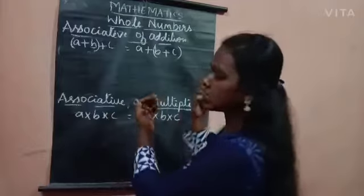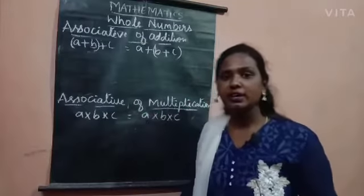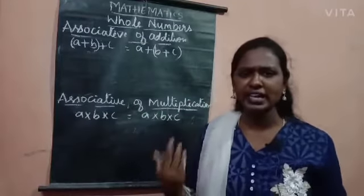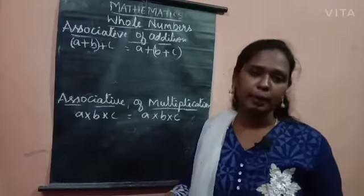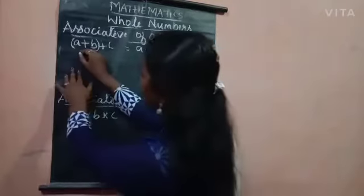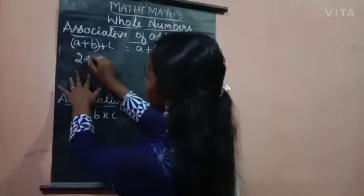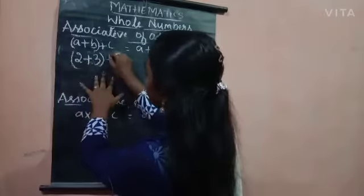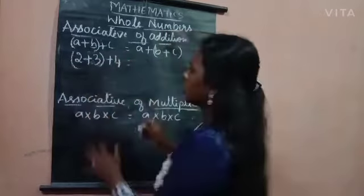Let us think A is 2, B is 3 and C is 4. If you want any other numbers, you can apply it. So I am applying A as 2 plus B is 3, and C is 4.